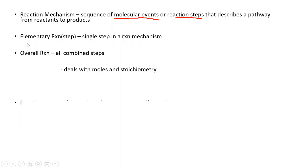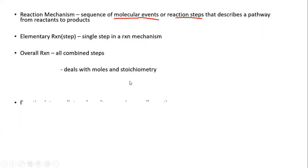The elementary step is different from the overall reaction. For the overall reaction, we combine all the steps together to get the overall chemical equation. Elementary steps deal with individual molecules, whereas the overall reaction deals with moles and stoichiometry. From the elementary steps, we can write the rate law because we're dealing with individual molecules.